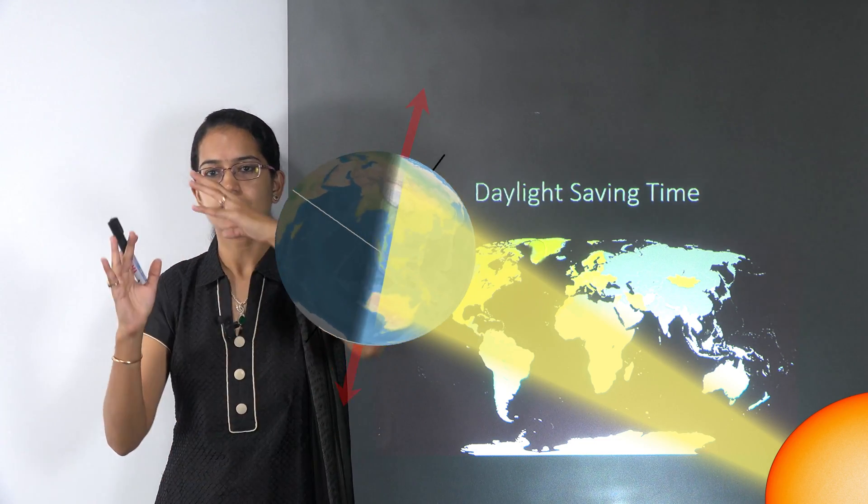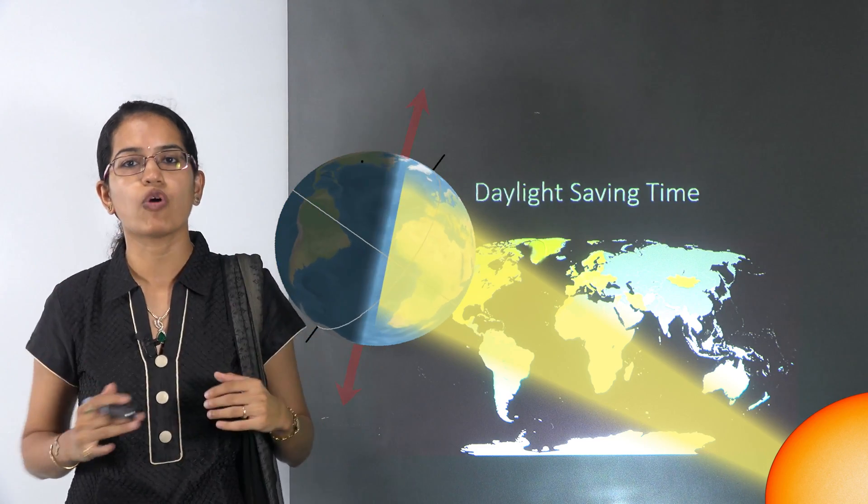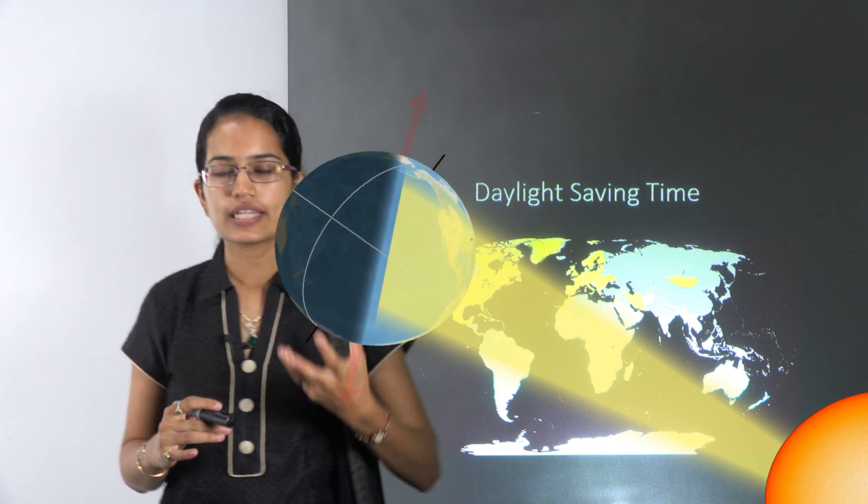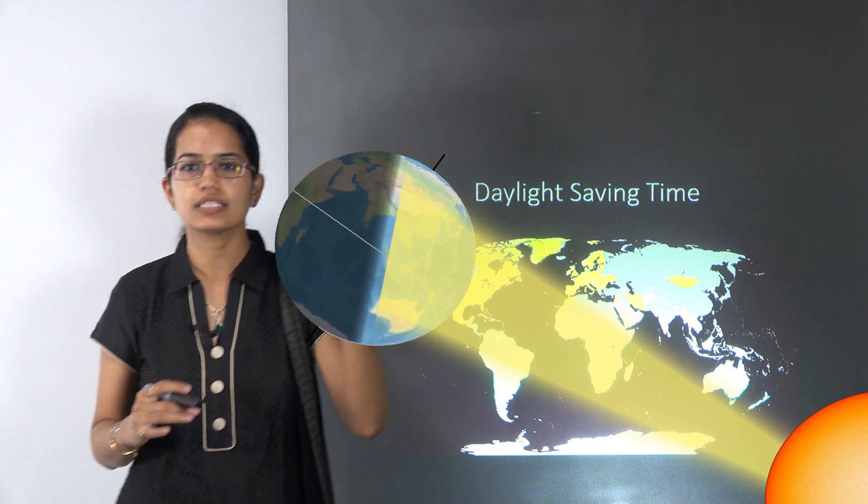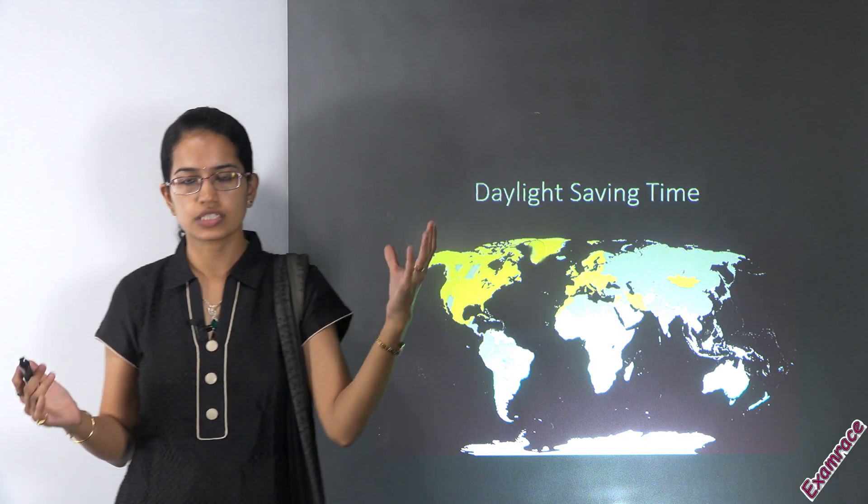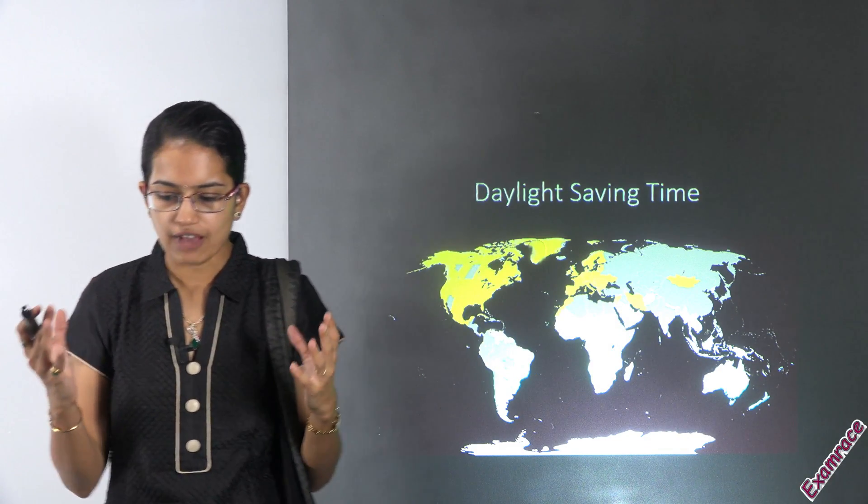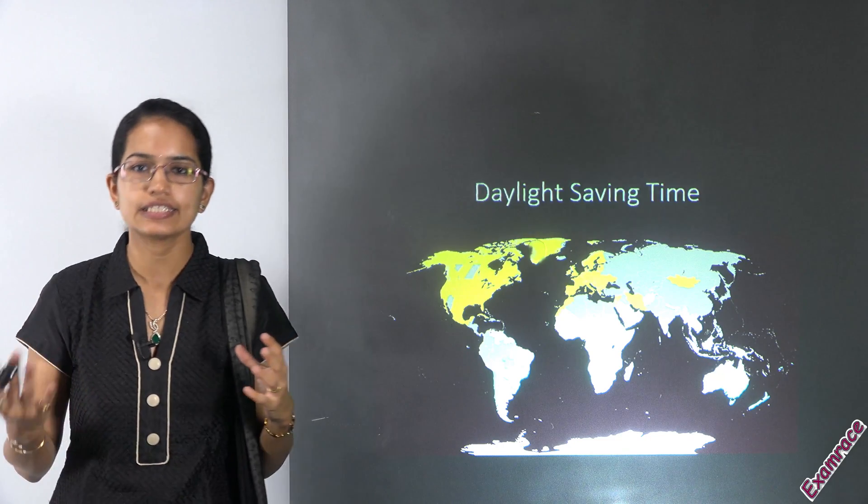That's the kind of extreme cases because the rays of the sun fall slanting. Now to understand what happens in the countries lying around 60 degrees, we have the concept of daylight saving.